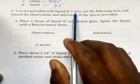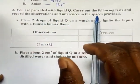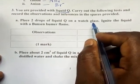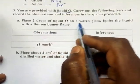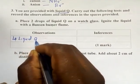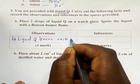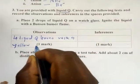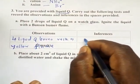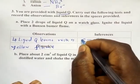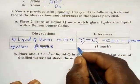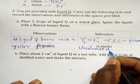You are also provided with liquid Q. Carry out the following tests and record the observations and inferences. Place two drops of liquid Q on a watch glass and ignite it with a Bunsen burner flame. The observation is that liquid Q burns with a yellow sooty flame, which confirms that an unsaturated organic compound — one with a double bond or triple bond — is present.